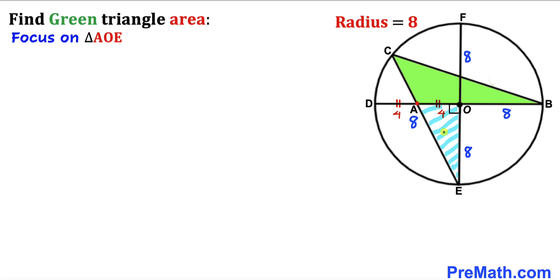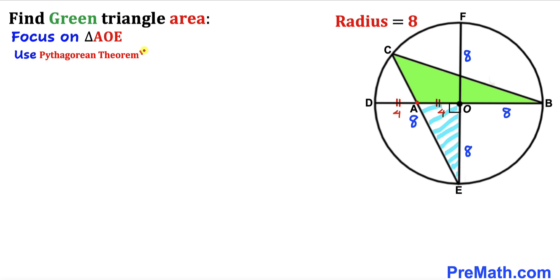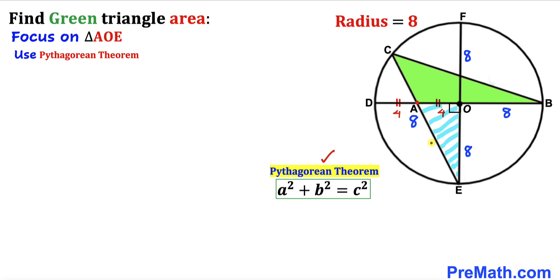Let's focus on right triangle AOE, whose side lengths are 8 and 4, and now we are going to calculate side length AE using the Pythagorean theorem: A² + B² = C². Let me call the longest leg side C, this side lowercase a, and this side lowercase b.